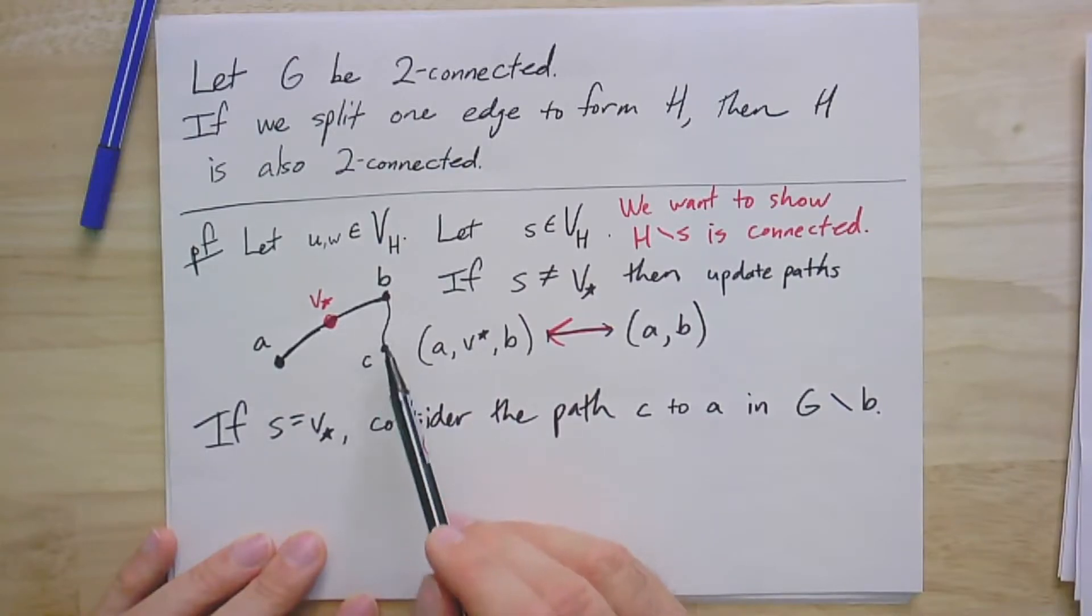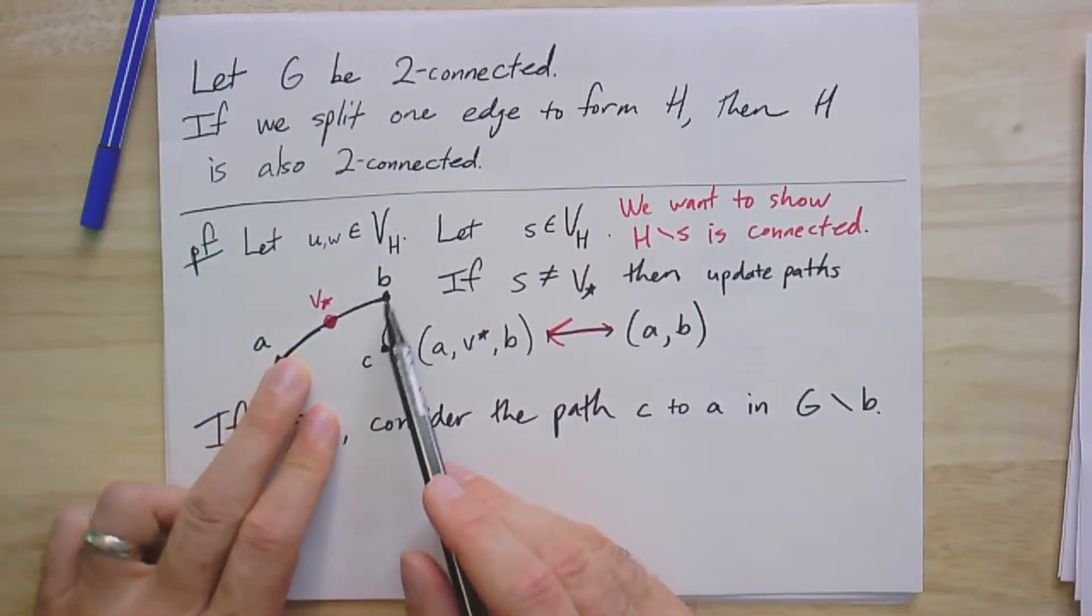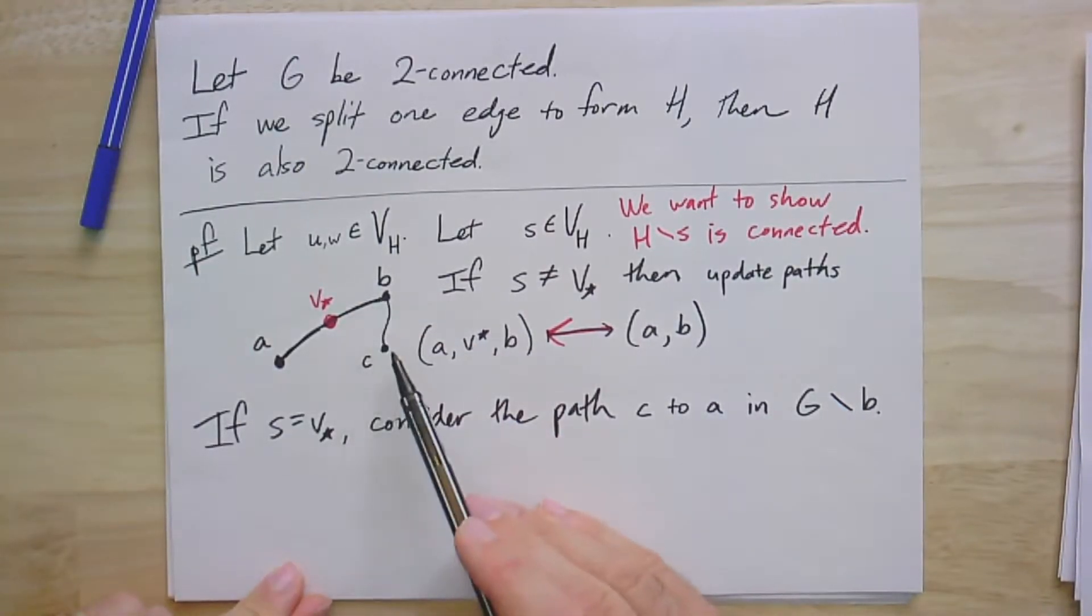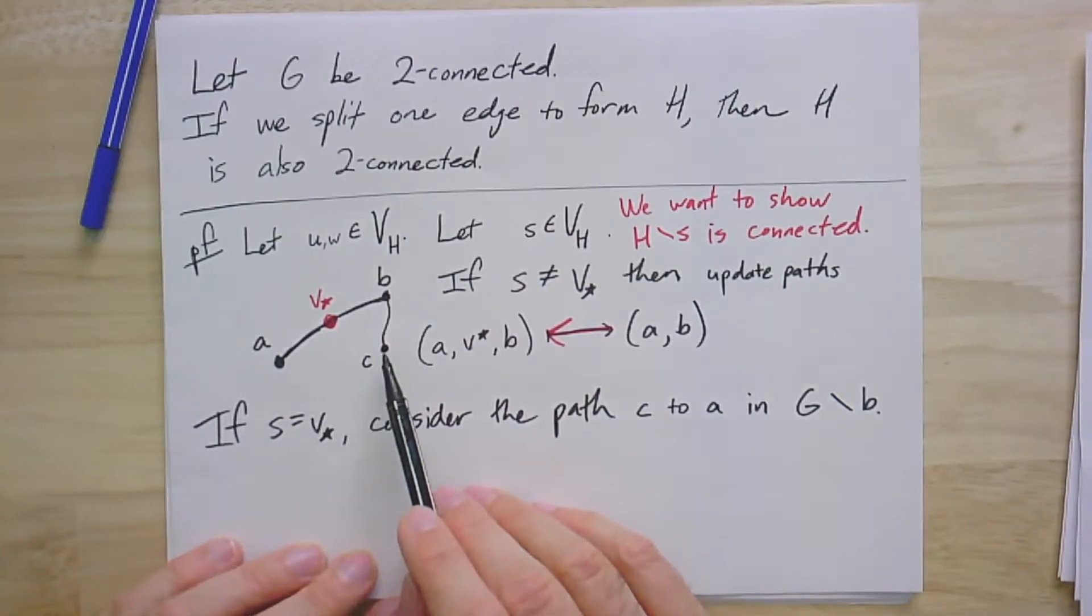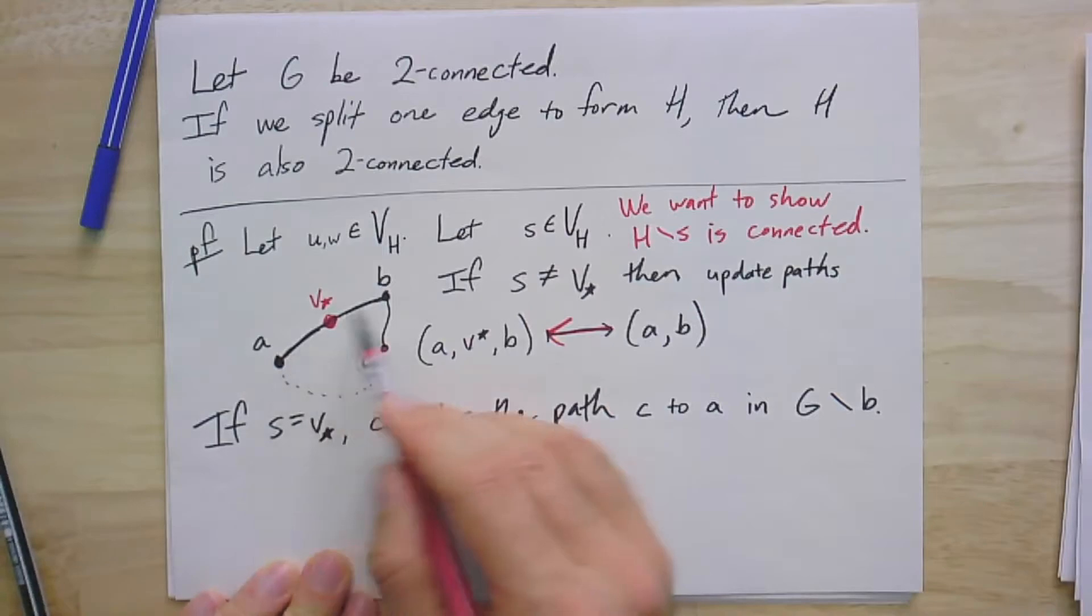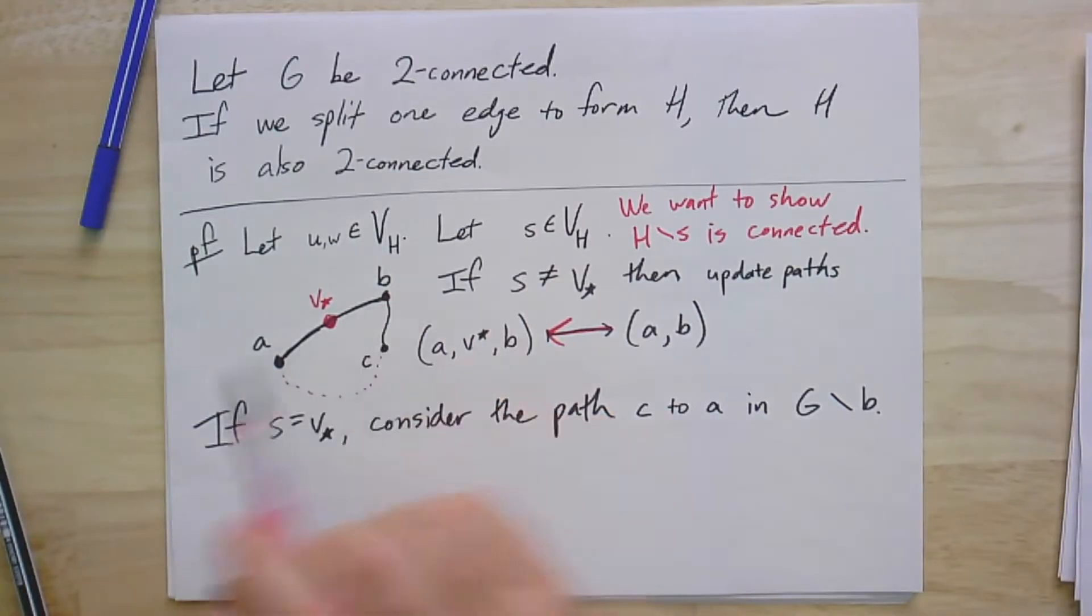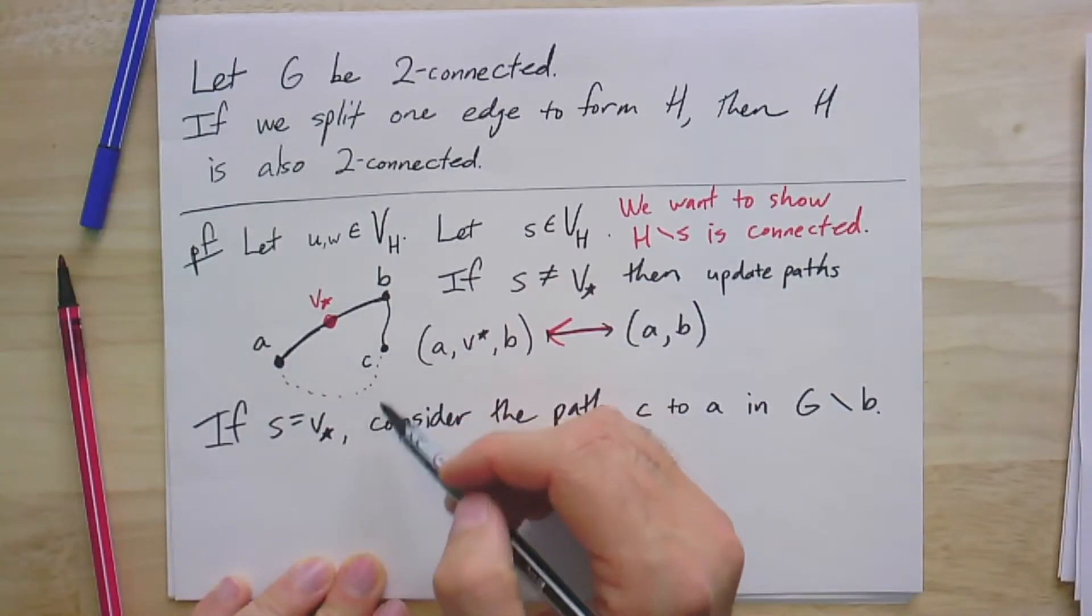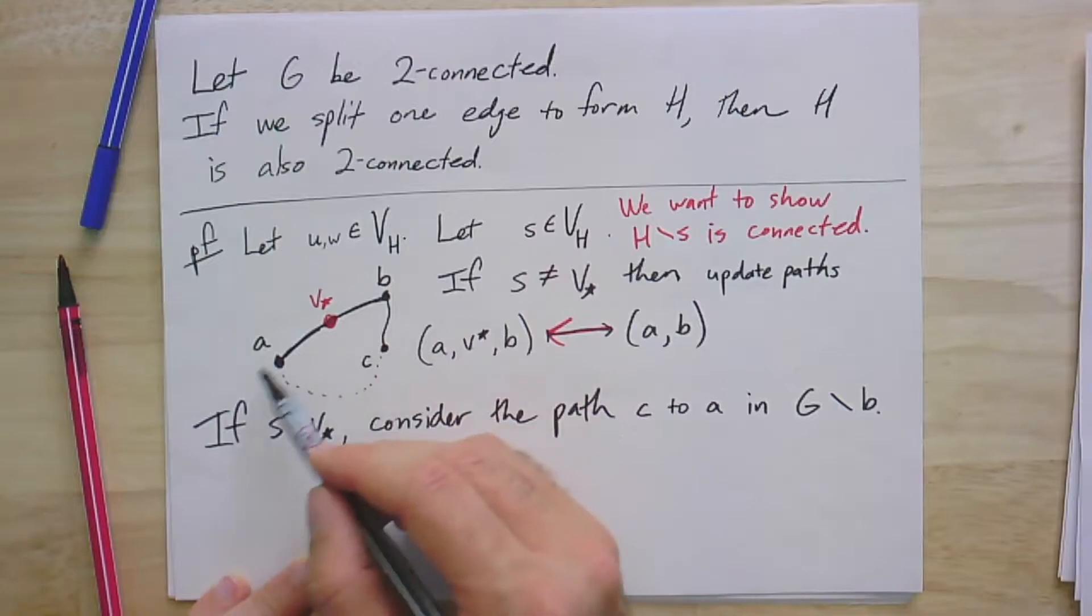First of all, B has to have at least one other neighbor, because if it didn't, then I could remove A and B would be an isolated vertex, which is not possible because G is two connected. So, I know that B has at least one other neighbor. And if I remove B, G is still connected, so there's still a path from A to C. Now, that path does not use the edge AB because the vertex B is not in G minus B. So, I know that there's some other path that avoids this edge AB.